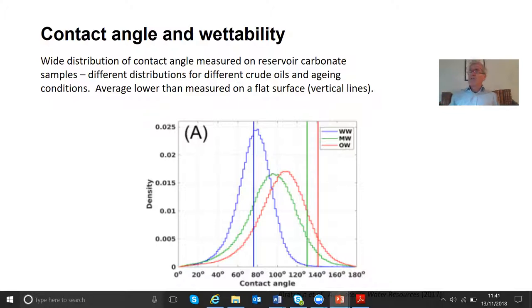But you then might say, well why is there a distribution? Well because of course the real surface in a rock is a rough surface. And when we look at contact angles on a rough surface you can see a range of effective angles. So we see a range of angles because we're looking at a rough surface.